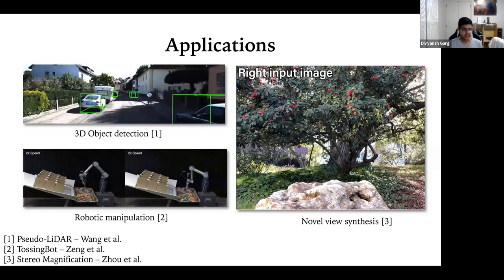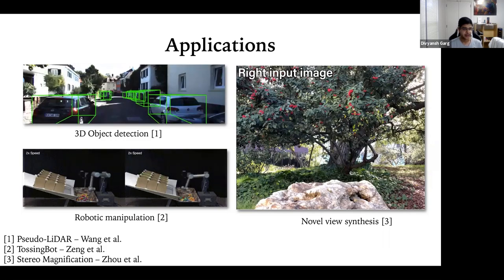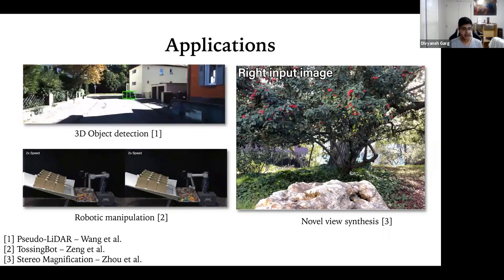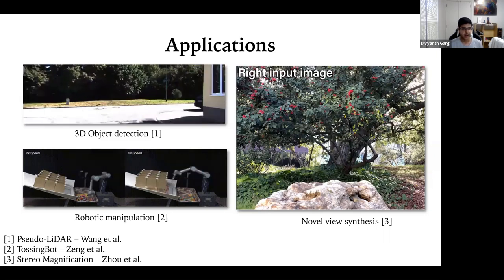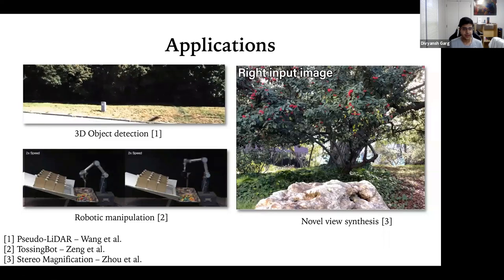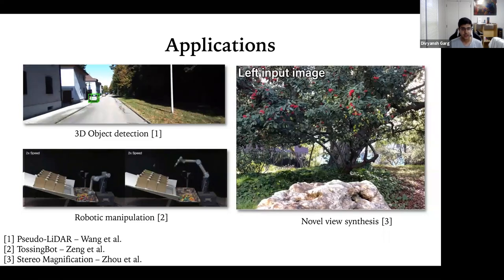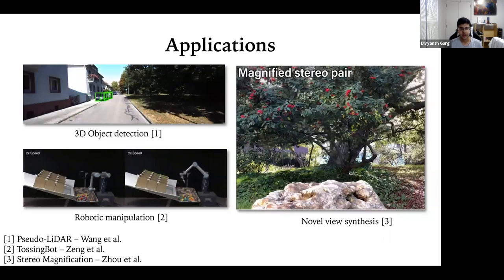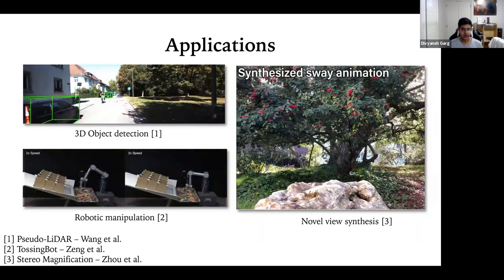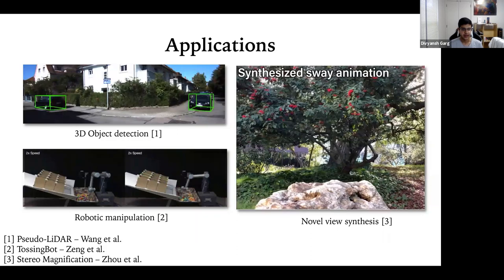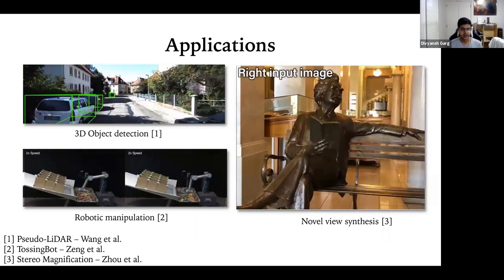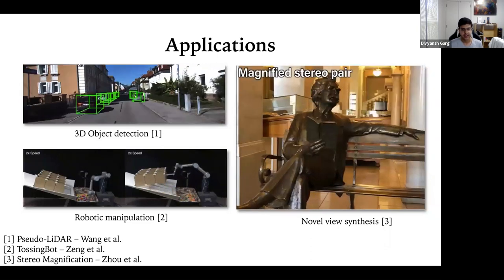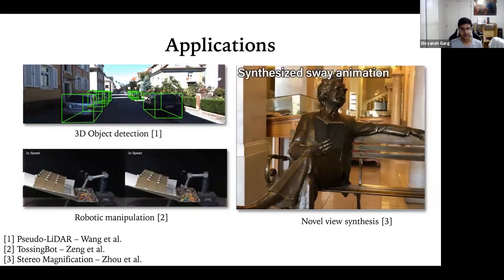Another example is robotic manipulation. If you have a robot picking objects and placing them in boxes — as is already being done in Amazon warehouses — you need a good 3D understanding of the world. Finally, an application is in graphics, where we want to generate novel views of the world just using current input images, which can be done if you know how to perceive the world properly.